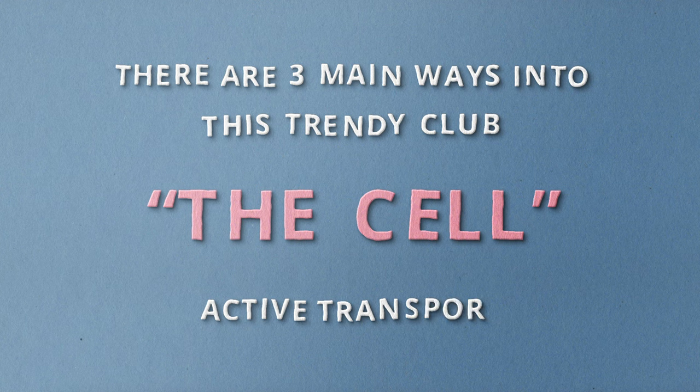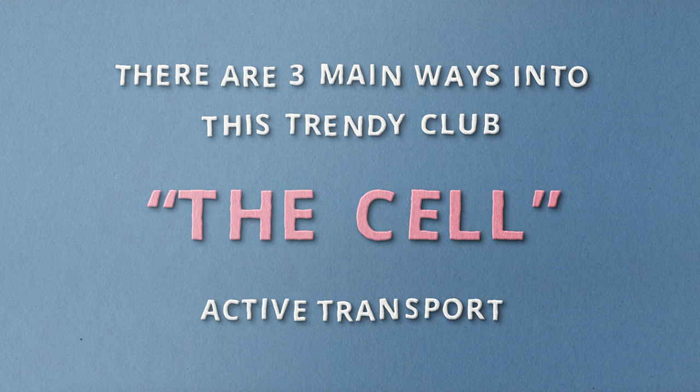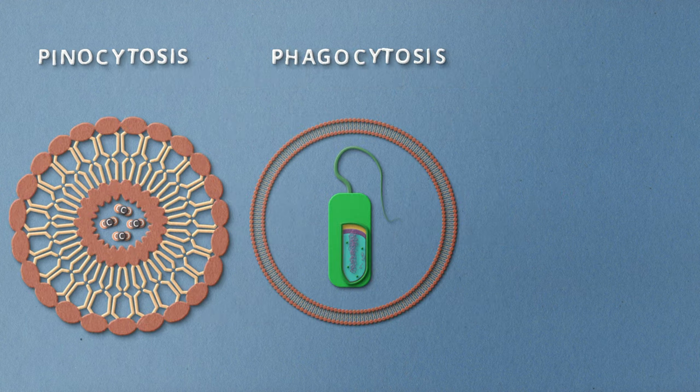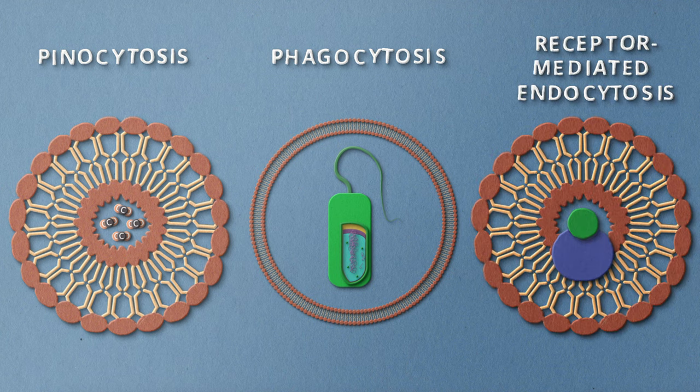There are three main ways into this trendy club we call the cell by active transport. You can enter by pinocytosis, phagocytosis, or receptor-mediated endocytosis.